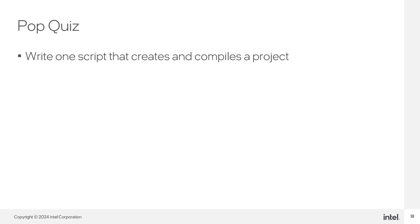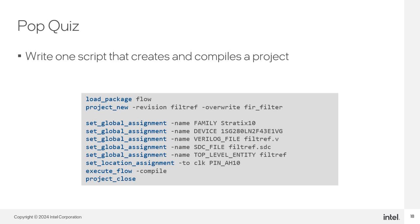Now it's time for a pop quiz: write a script that creates and compiles a project. Here's the answer. This script combines project creation with project compilation. First, load_package flow loads the flow package. The commands from project_new to set_location_assignment create the project and set it up with assignments. Then execute_flow compiles the design. The execute_flow command automatically writes assignments to QSF, so there's no need to export assignments. Lastly, project_close closes the project after it's been compiled.